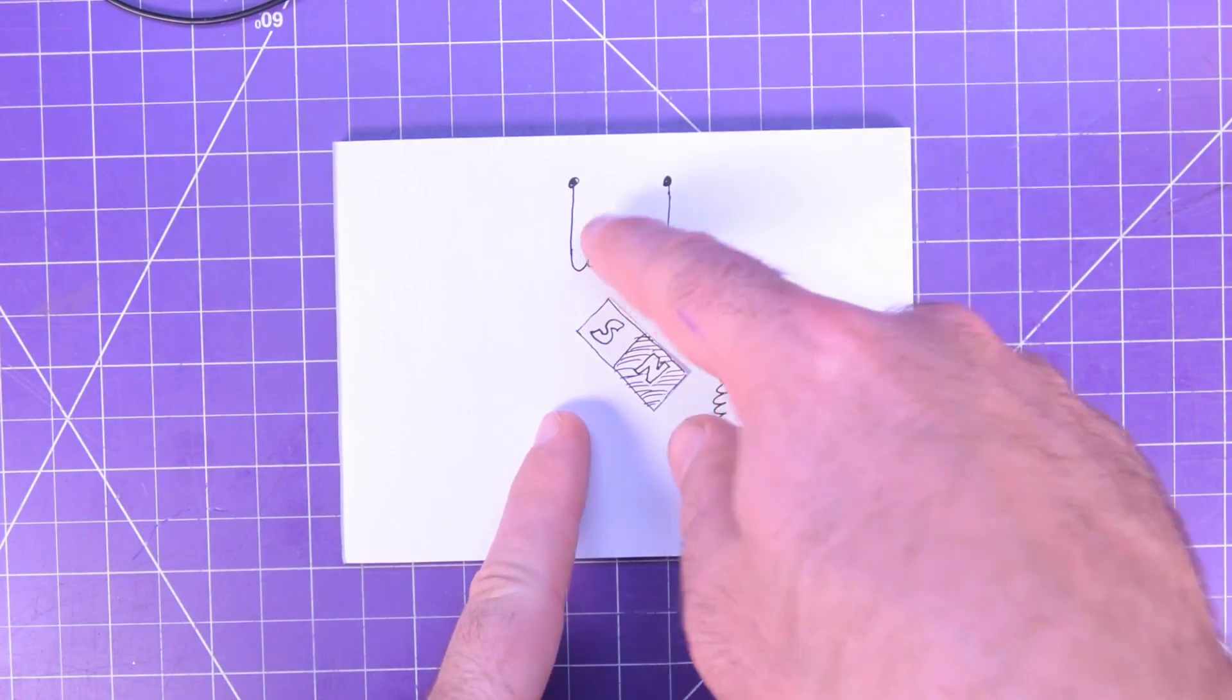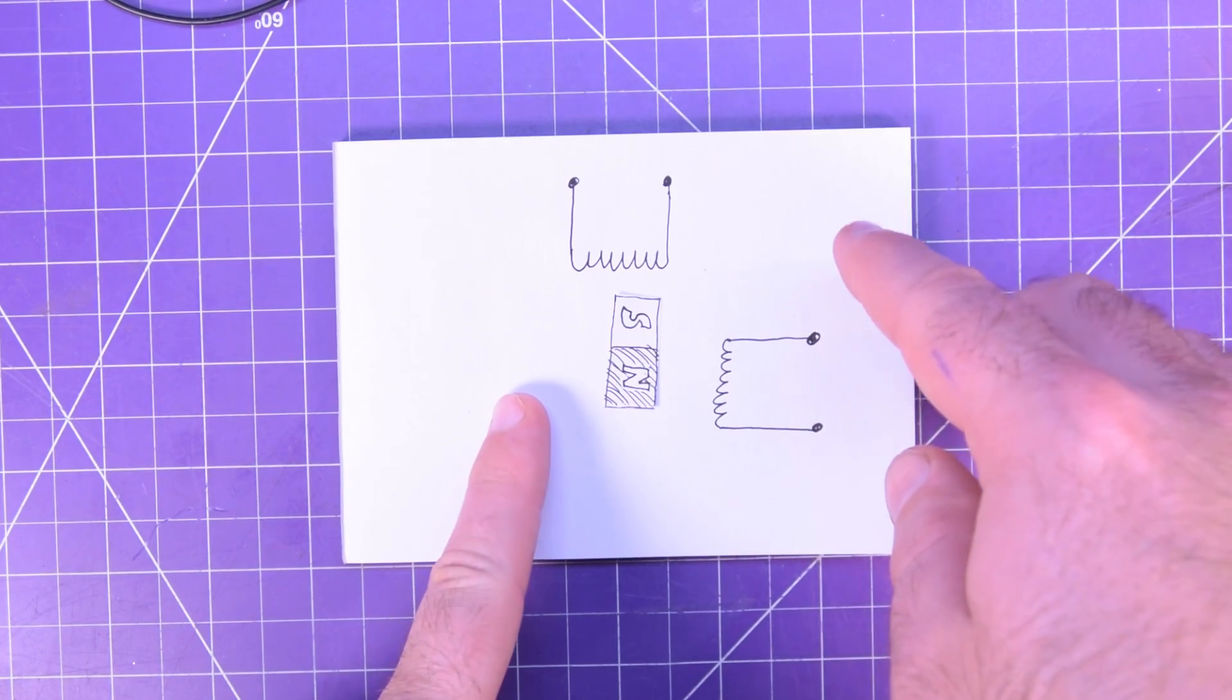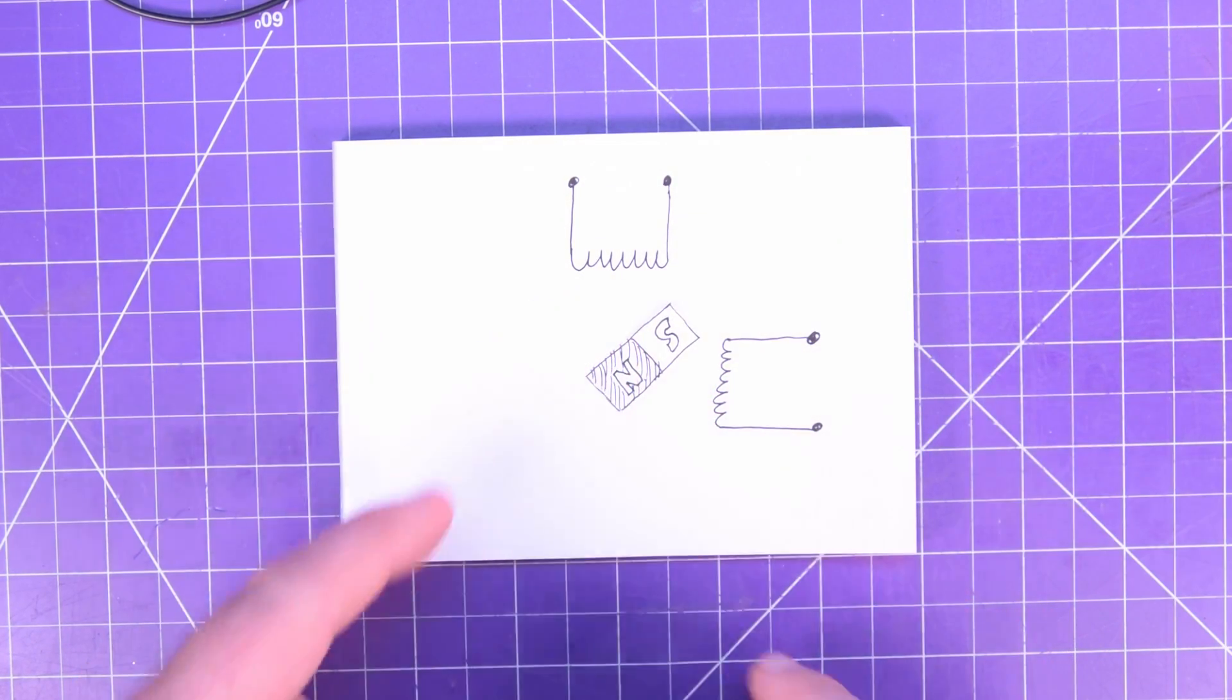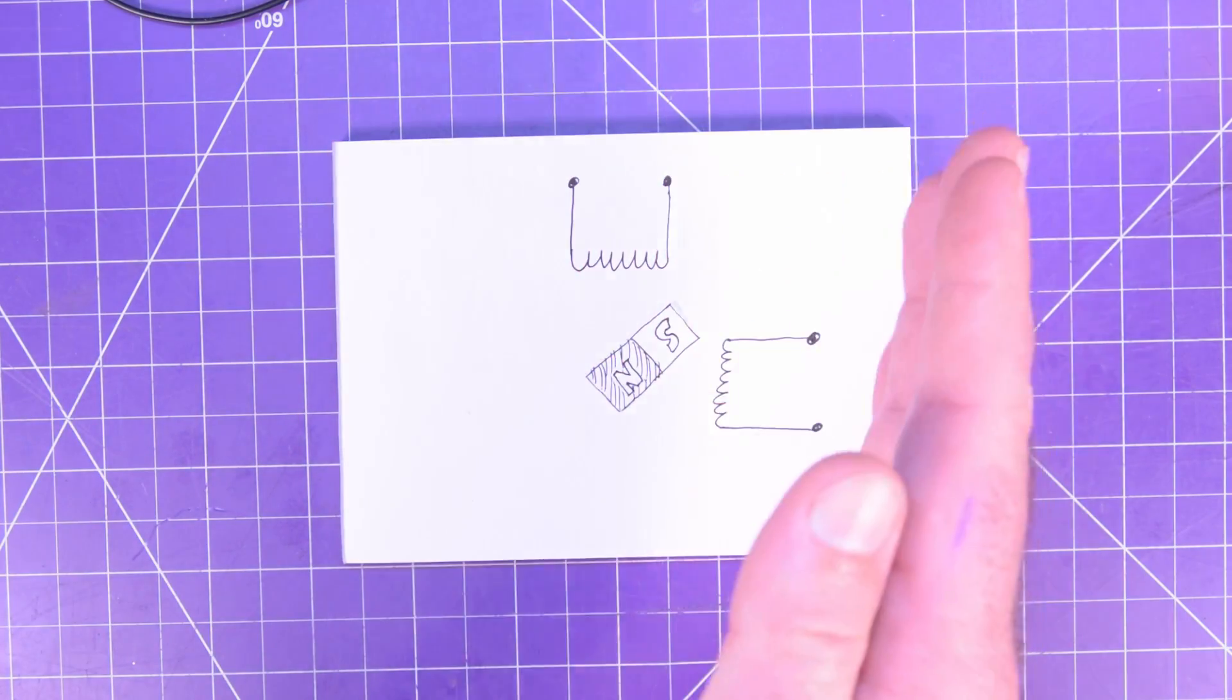And then so on and so on, you just repeat the whole thing. Go positive here, negative there, that becomes a north pole, pulls the south over. This one makes a south pole again, moves this one over. So that's what a stepper motor is. It does these steps.